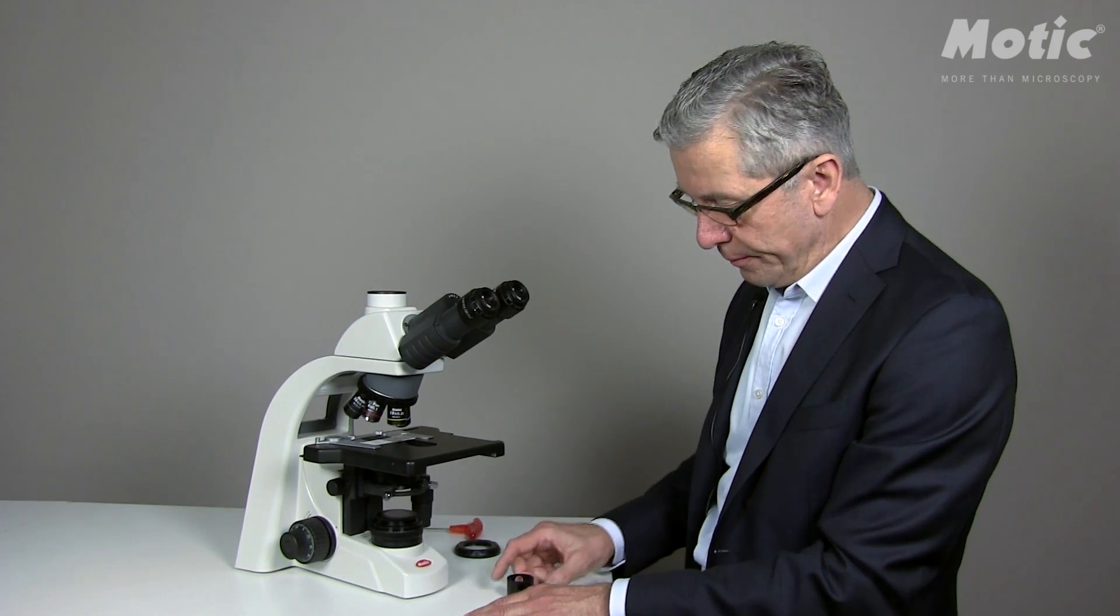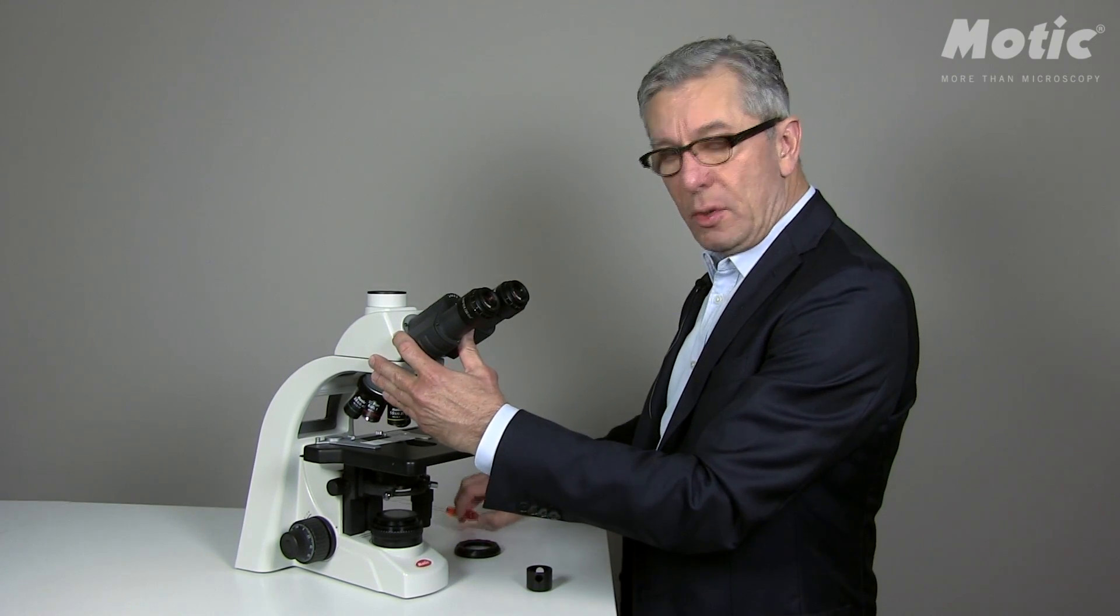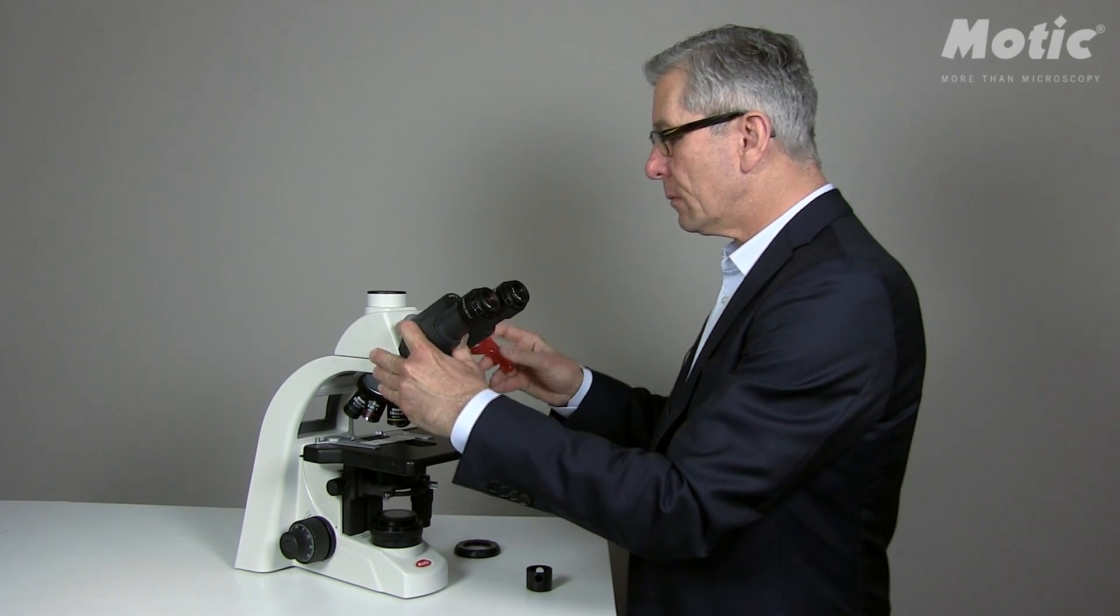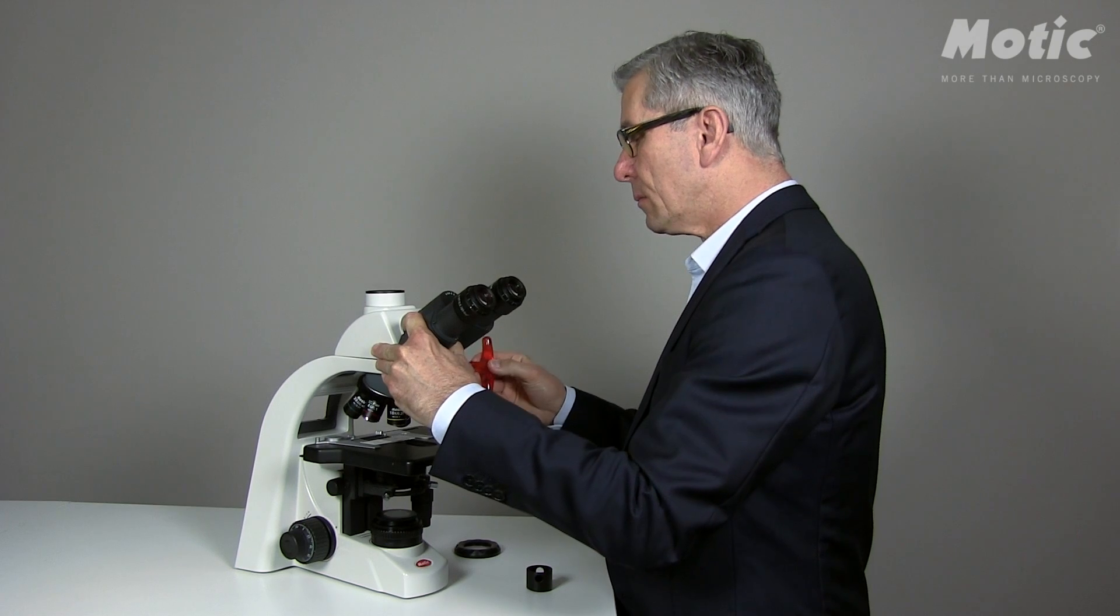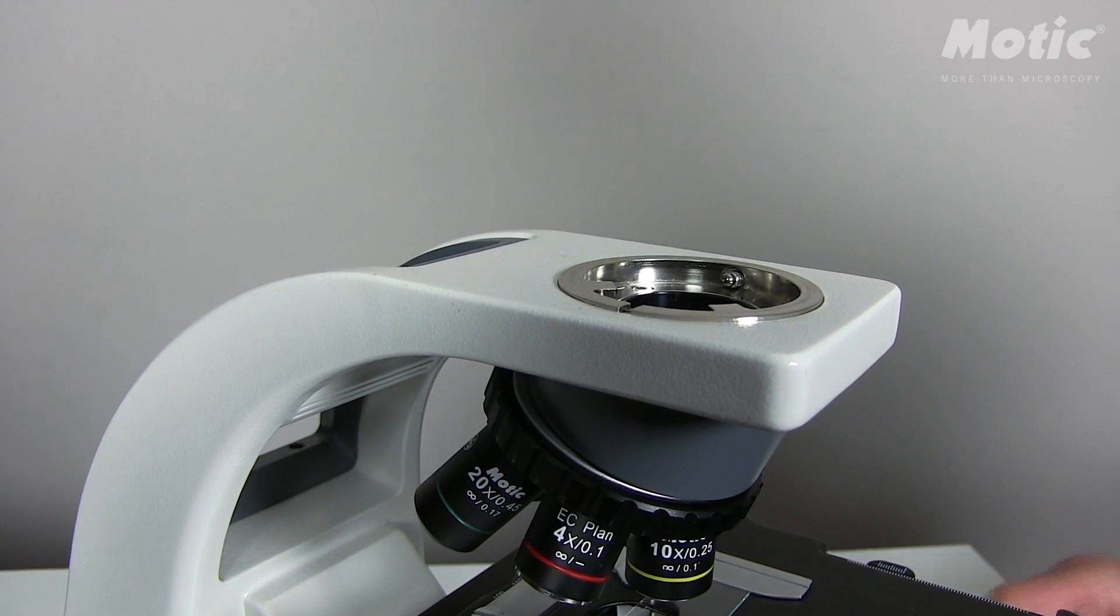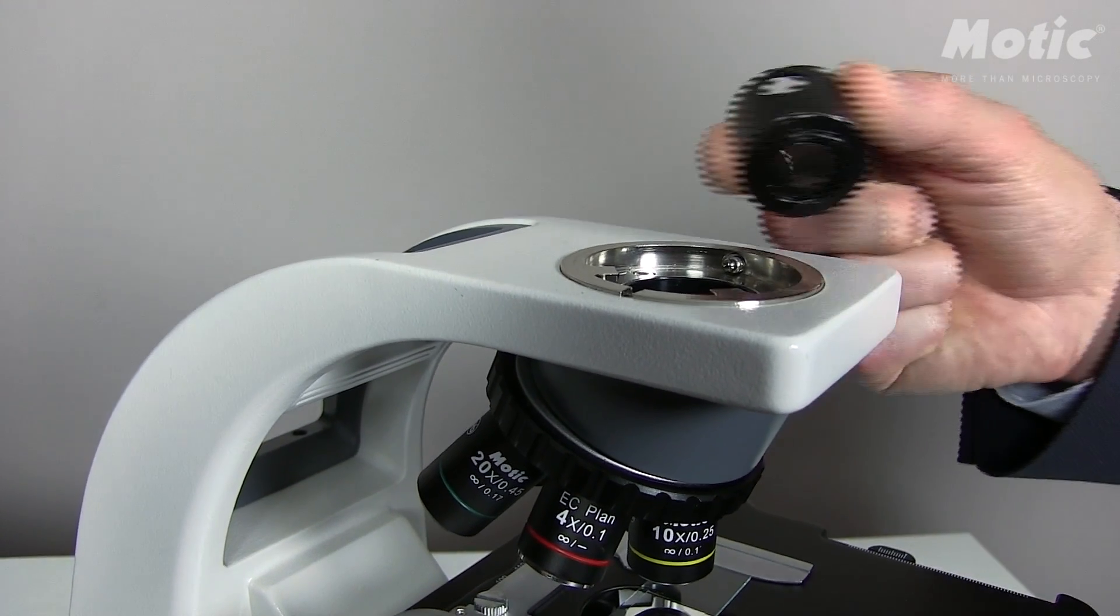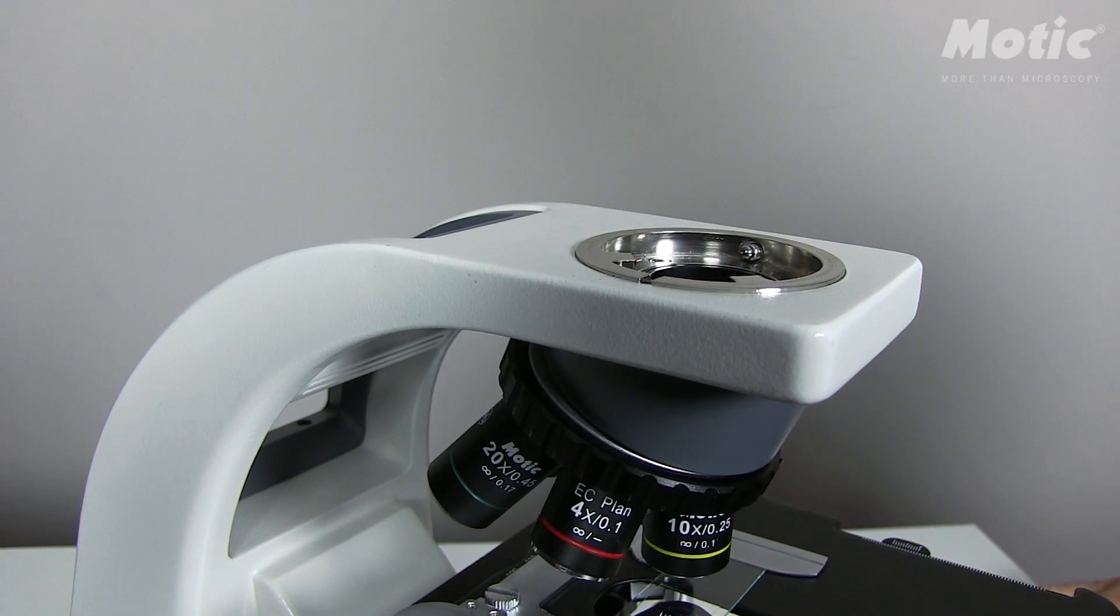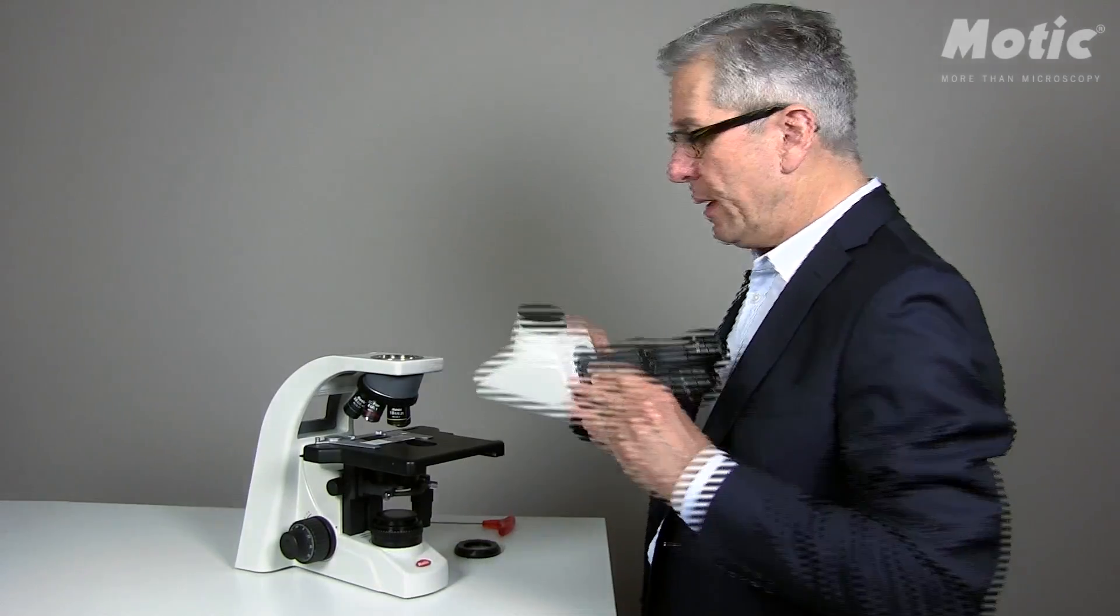For the analyzer, you have to unscrew the IBIS tube completely. Take the analyzer and just let it drop down into the upper part of the microscope. Again, take the IBIS tube and fix it firmly.